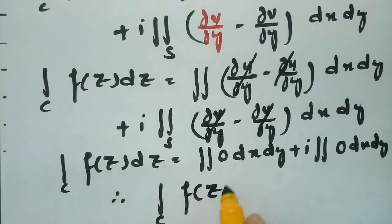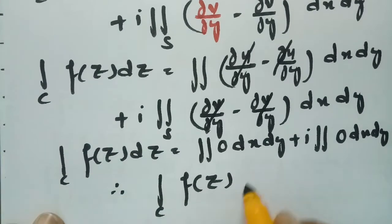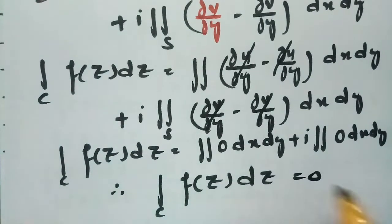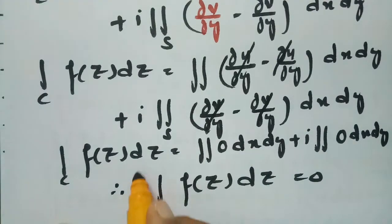Therefore the line integral of f(z) dz is equal to 0, which is exactly what we had to prove according to the theorem.